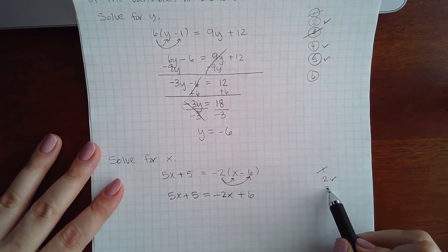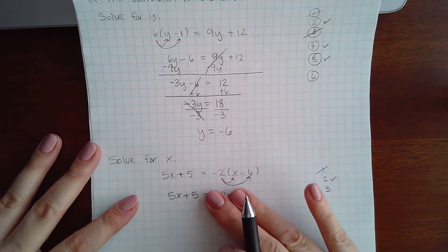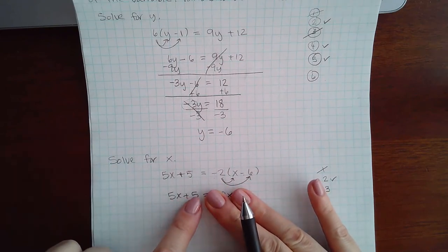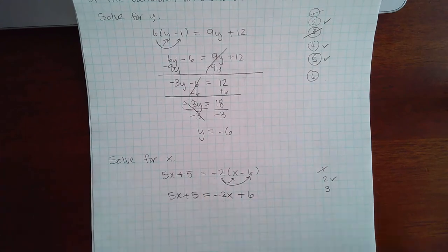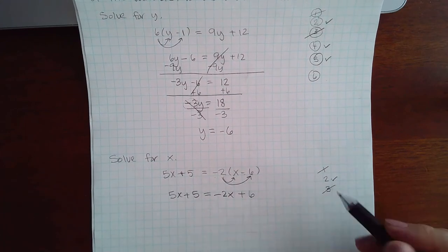Then I'm going to do step 3, which is to combine like terms, but a variable term and a constant term are not like terms. A variable term and a constant term are not like terms, so I'll skip this step.